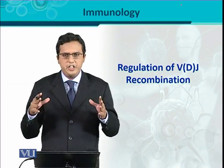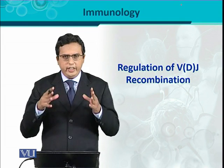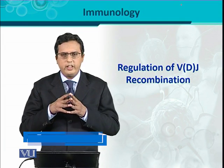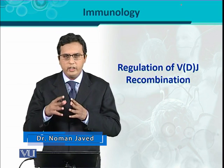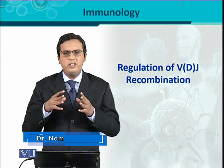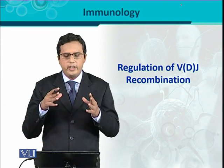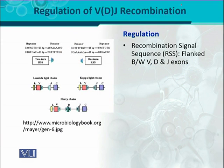Regulation of V-D-J recombination: V-D-J recombination is the combinational diversity that determines the diversity of antibodies. Here is an important question about how they are going to be regulated. In this regulation, there is a very important role of certain sequences which are called as Recombination Signal Sequences, or RSS. RSS are sequences that are present in between the V, D, or J regions.